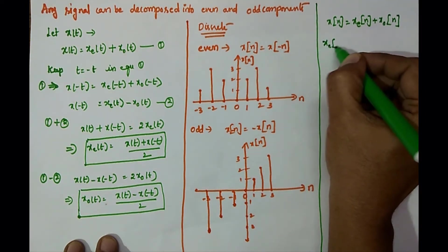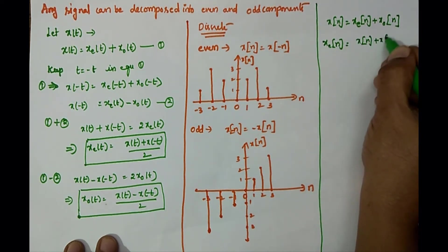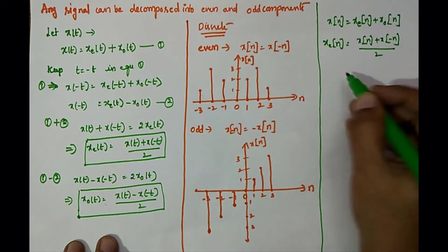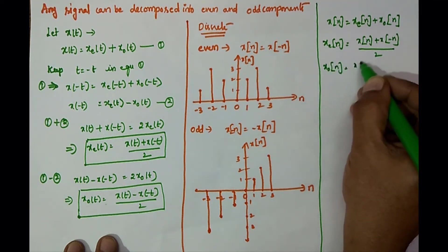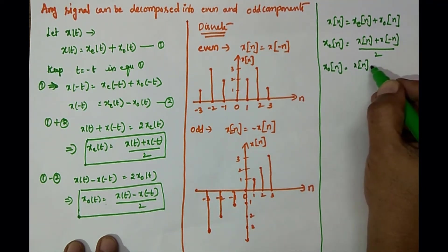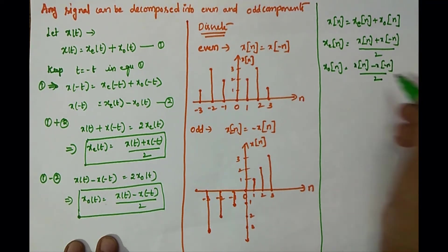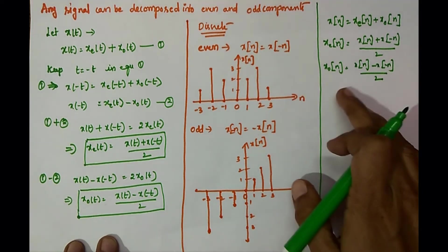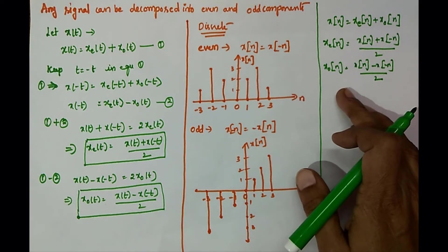The even component xe of n and the odd component can be found using the same formulas as in the continuous case. These are the formulas to obtain the even and odd components present in a given discrete sequence.